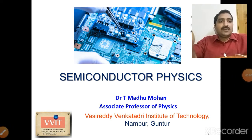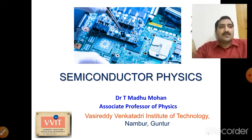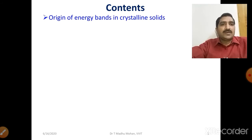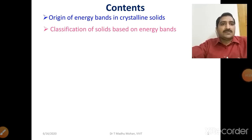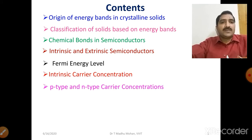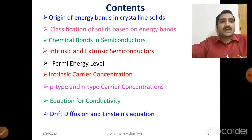Semiconductor physics is the unit for an applied physics course. The contents include: origin of energy bands in crystalline solids, classification of solids based on energy bands, chemical bonds in semiconductors, intrinsic and extrinsic semiconductors, Fermi energy level, intrinsic carrier concentration, p-type and n-type semiconductor and their carrier concentrations, equation for conductivity, drift, diffusion and Einstein's equation, and finally Hall effect and its applications.